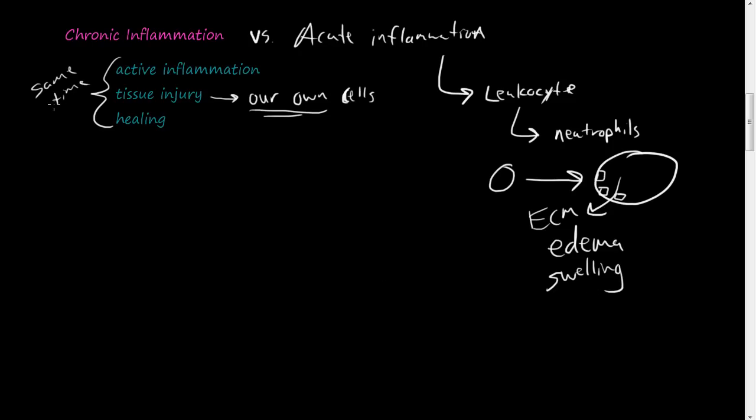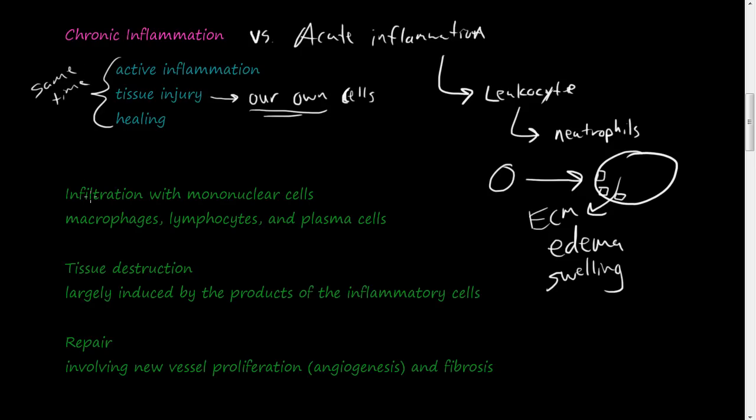In chronic inflammation, it's a little bit different. In chronic inflammation, we have three main processes that happen at the same time: active inflammation, tissue injury, and healing.